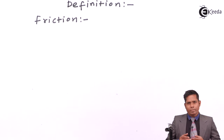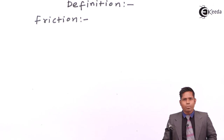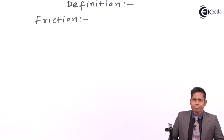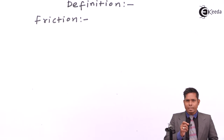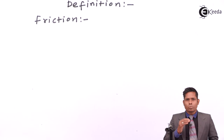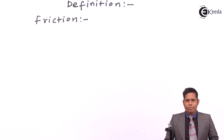Friction will oppose the relative motion — it never opposes the motion of the object itself. So we will write that it will oppose the relative motion between the two surfaces in contact. And then we will discuss about the cause of this friction.